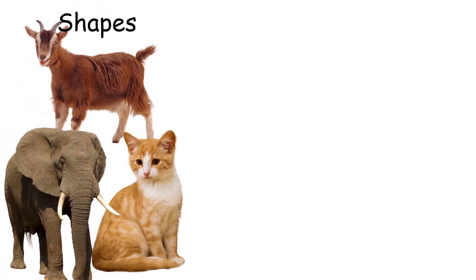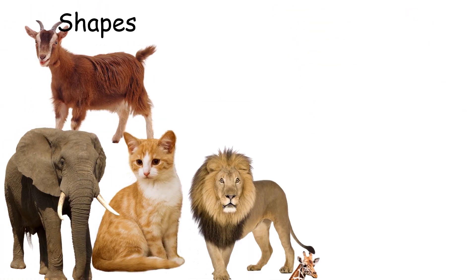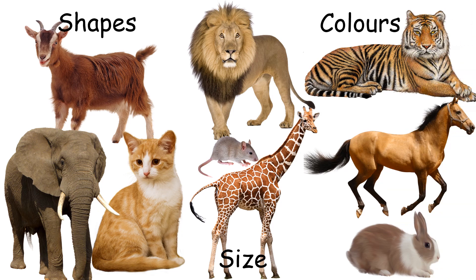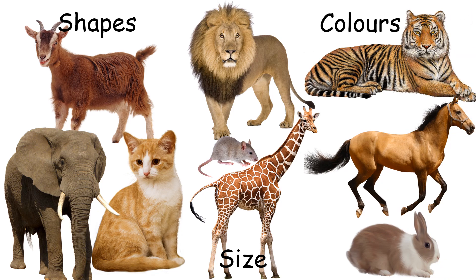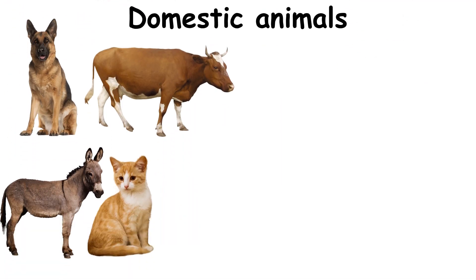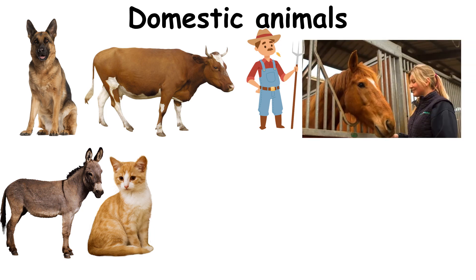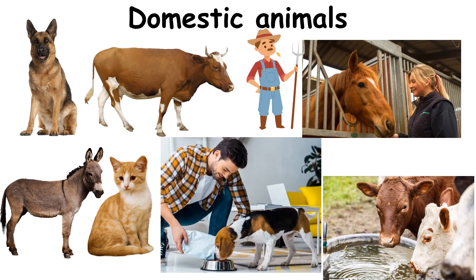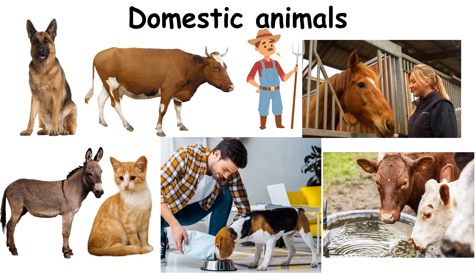They differ in shapes, sizes and colors. Animals that depend on humans for their shelter, food and water are called domestic animals.